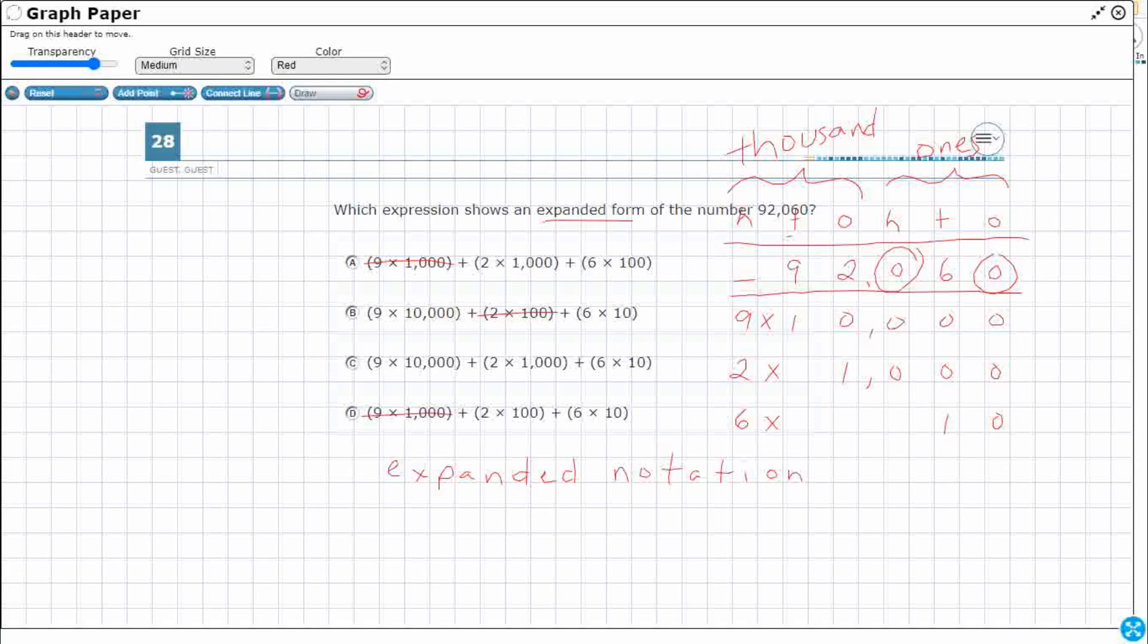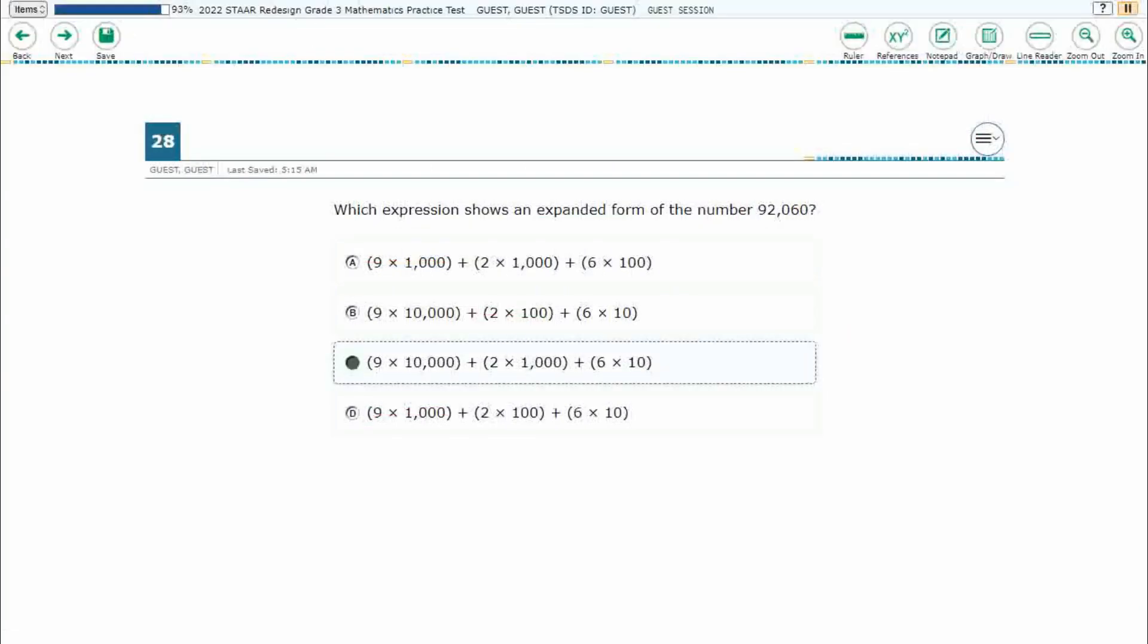So if you add these up, if you take this as a vertical addition problem, you could get all that back to where you wanted with 92,060. And we've got that six times 10 looking good, looking good, looking good. So our answer here is going to be C. Okay.